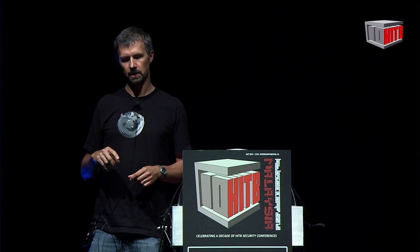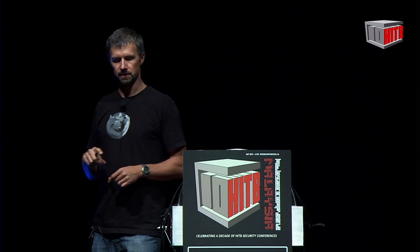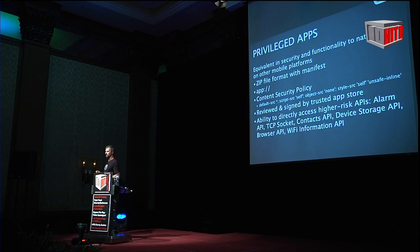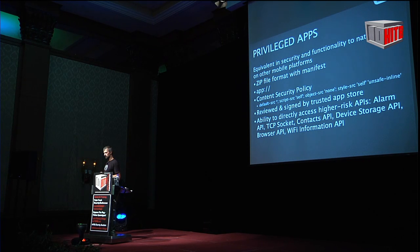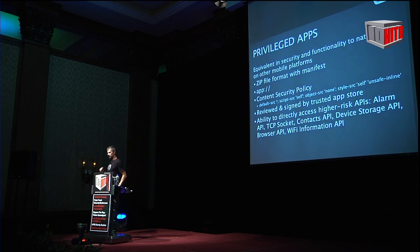Because of these guarantees, privileged apps can have persistent access to higher-risk APIs like the Alarm API, TCP raw sockets, Contacts API, Device Storage API, Browser API, and Wi-Fi information API. Not every app has access to all these things — there's more detail about how these are made available.